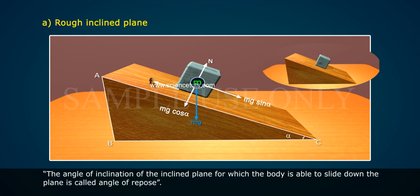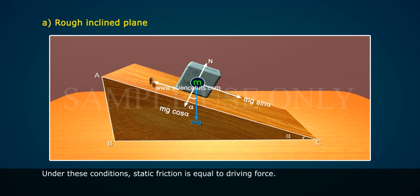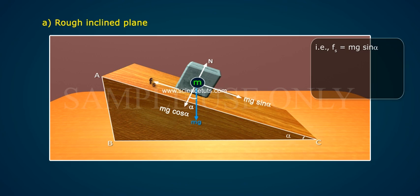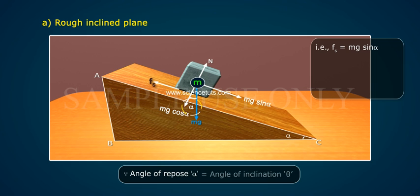The angle of inclination of the inclined plane for which the body is able to slide down the plane is called angle of repose. Under these conditions, static friction equals driving force: Fs equals Mg sin α. Since angle of repose α equals angle of inclination θ, μs N equals Mg sin α, and μs mg cos α equals Mg sin α.